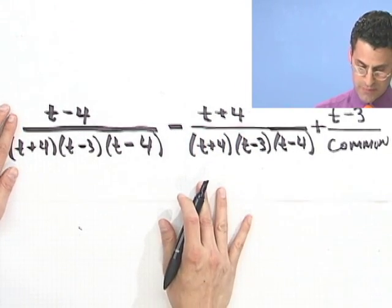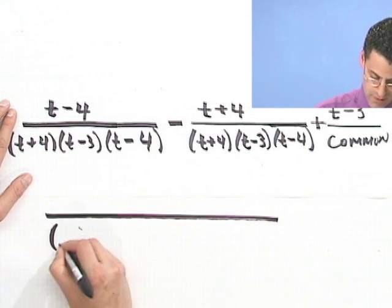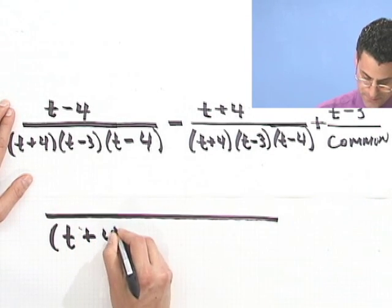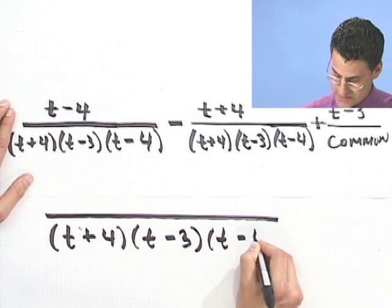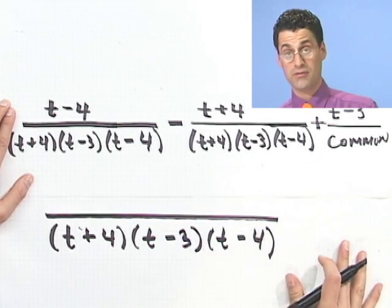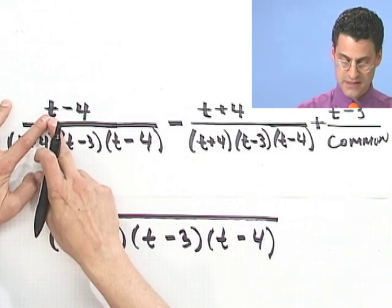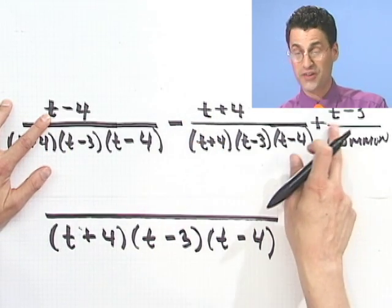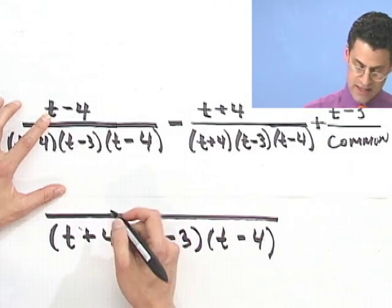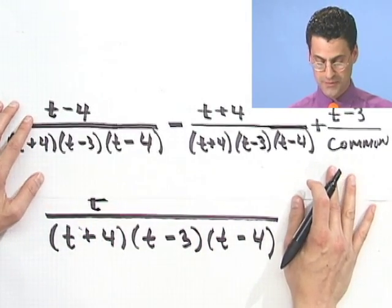So it's all over the common bottom of t plus 4, t minus 3, and t minus 4. I'm not going to multiply that out, and you shouldn't either, and that saves a lot of work. But now let's combine things. I have a t, and then I have a minus t, so that actually drops out, but then I have a plus t. So this all gives me just the net gain of t.